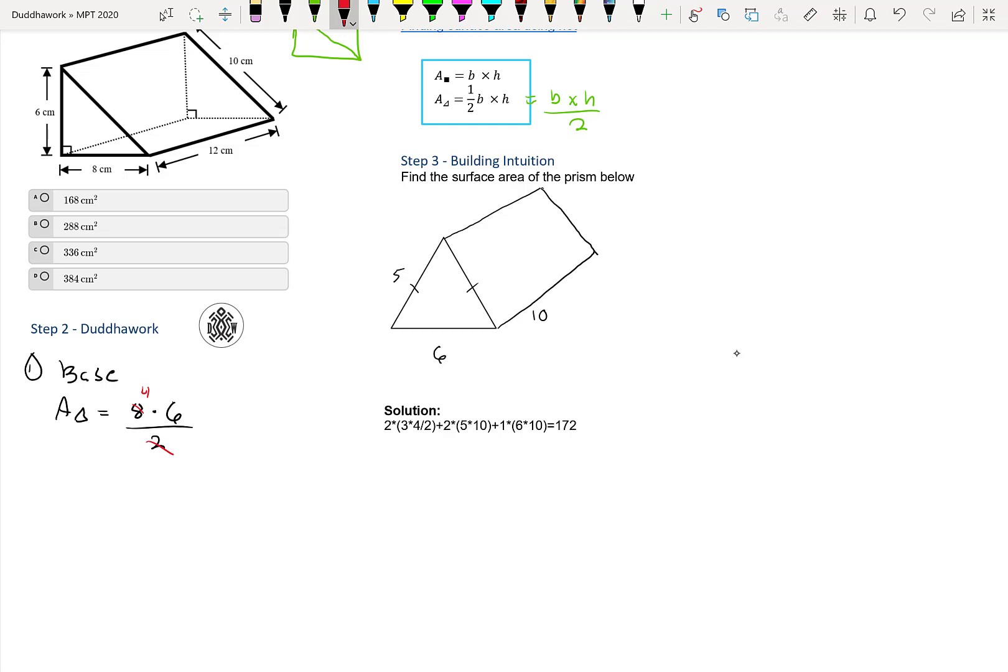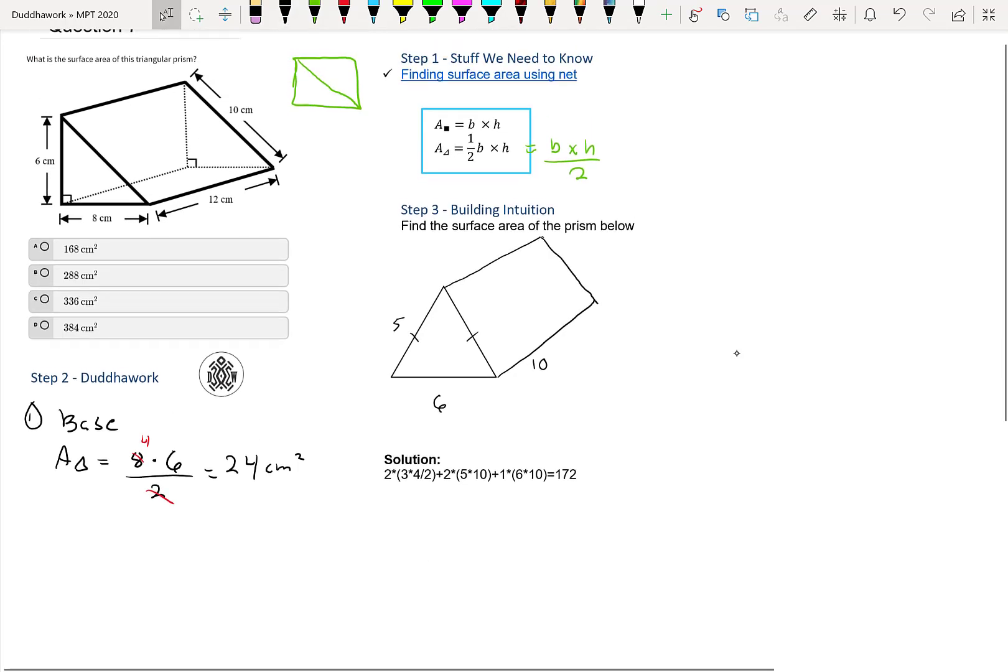And then we can cancel the 2. So, then that would be 4 times 6, that's 24. And that's the area of our triangle. And it would be centimeters squared, because it's area, right? It's centimeters times centimeters, so that's centimeters squared.